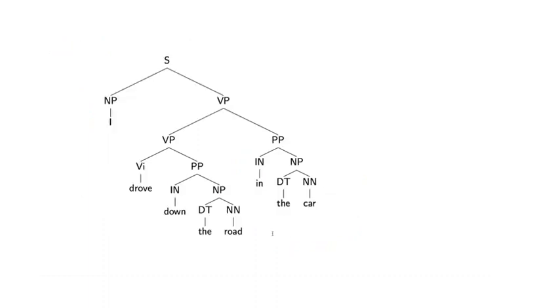A second source is prepositional phrase attachment. I'll just recap. We had this example from early on in this lecture where I have the sentence, I drove down the road in the car, and I noticed that we had two possible structures for this sentence.